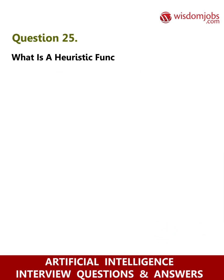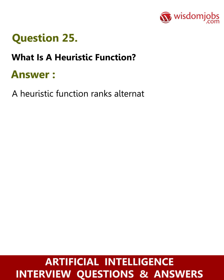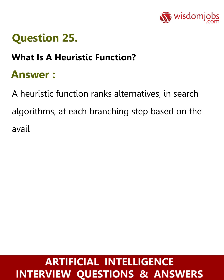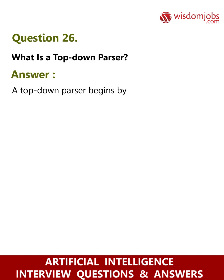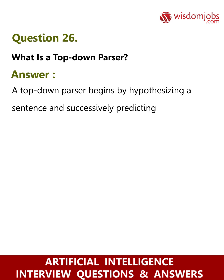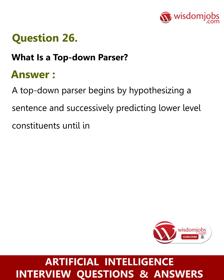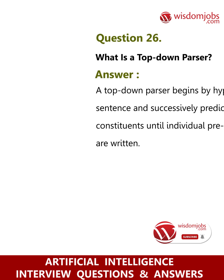Question 25: What is a heuristic function? Answer: A heuristic function ranks alternatives in search algorithms at each branching step based on the available information to decide which branch to follow. Question 26: What is a top-down parser? Answer: A top-down parser begins by hypothesizing a sentence and successively predicting lower-level constituents until individual pre-terminal symbols are written.